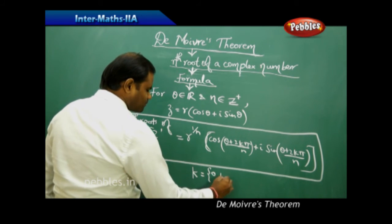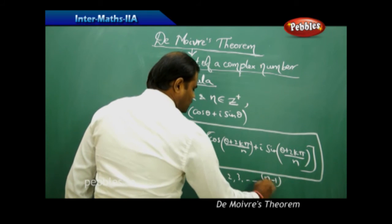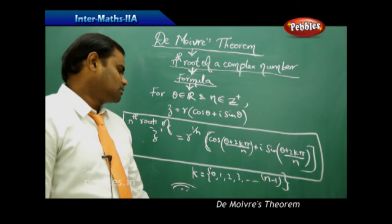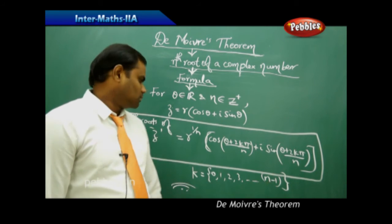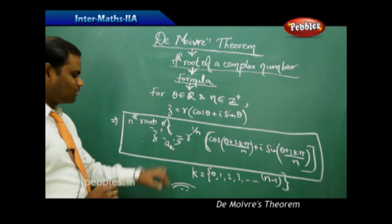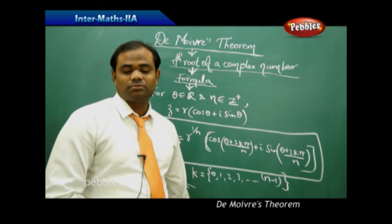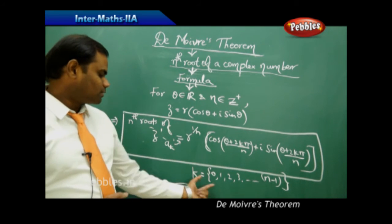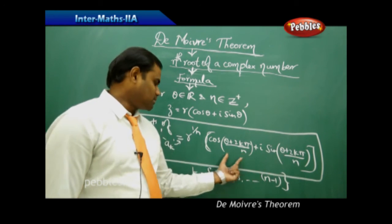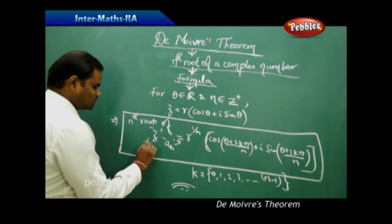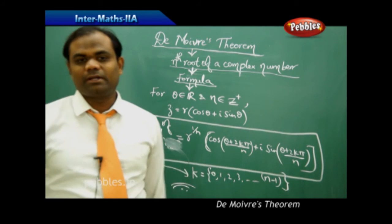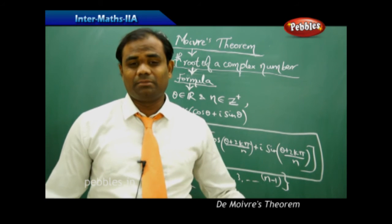Here k runs from 0 to n−1, giving n distinct roots. Each root, denoted aₖ, is obtained by substituting k = 0, 1, 2, 3, ..., n−1 into the formula, yielding the n nth roots: a₀, a₁, a₂, ..., aₙ₋₁.